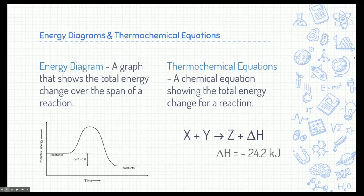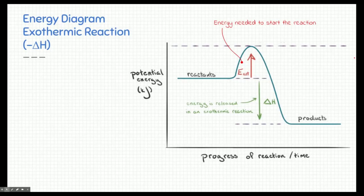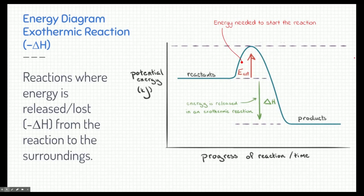How do we represent enthalpy or a change in energy? We can do it in one of two ways. One is using an energy diagram — a graph that shows the total energy change over the span of a reaction. Another way is to write a thermochemical equation, which is a chemistry equation with enthalpy included to show whether energy is being released or absorbed. Here's an example of an energy diagram, specifically for an exothermic reaction.